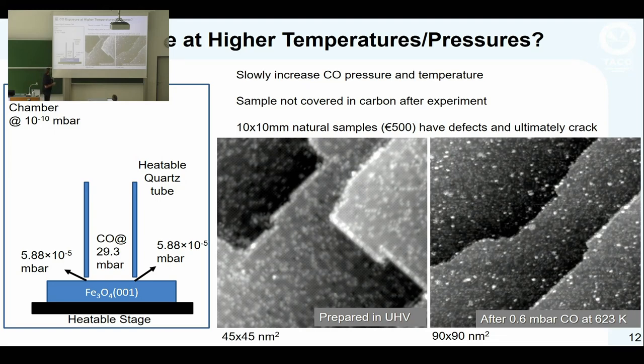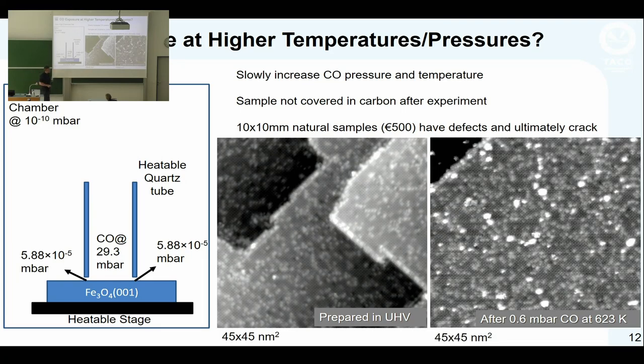This is our surface as prepared, and this is after 0.6 millibars of CO at 350C. There's not much difference between the two. There doesn't seem to be massive tearing apart of the surface. I was concerned we'd be left with a lump of iron if we reduced it all the way to metallic iron, but that doesn't happen. You get some blobs which are most likely carbon. Looking closely, the atomic scale structure is still the same, just with carbon blobs. No reduction happens.